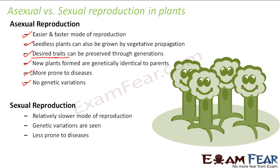On the other hand, sexual reproduction is a relatively slower mode of reproduction as far as the multiplication rate is concerned. However, genetic variations are seen, which are extremely important in the long run. These plants are less prone to diseases because the child will have some characteristics of the father and some of the mother. So we are not very sure that if one of the parents is diseased, the child is definitely going to be diseased — there are chances it can be and also chances that it cannot be. So these are some of the pros and cons of both sexual and asexual reproduction in plants.